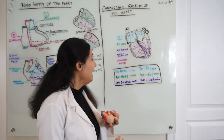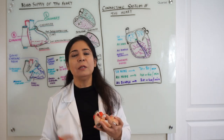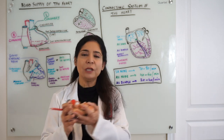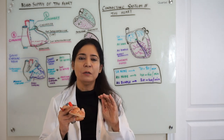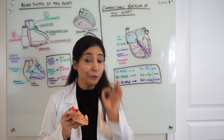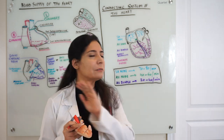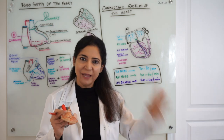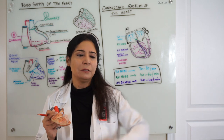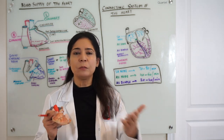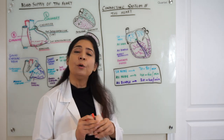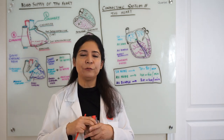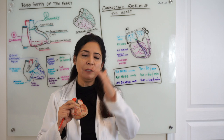If both the SA node and AV node fail, the ventricular musculature works according to the pace of the AV bundle at 20 to 40 beats per minute — a very critical condition. When the two nodes are failing and only the AV bundle is generating action potential, the beat rate is 20 to 40 beats per minute. It is essential that the physiological pacemaker functions properly to maintain the rhythm of the heart.